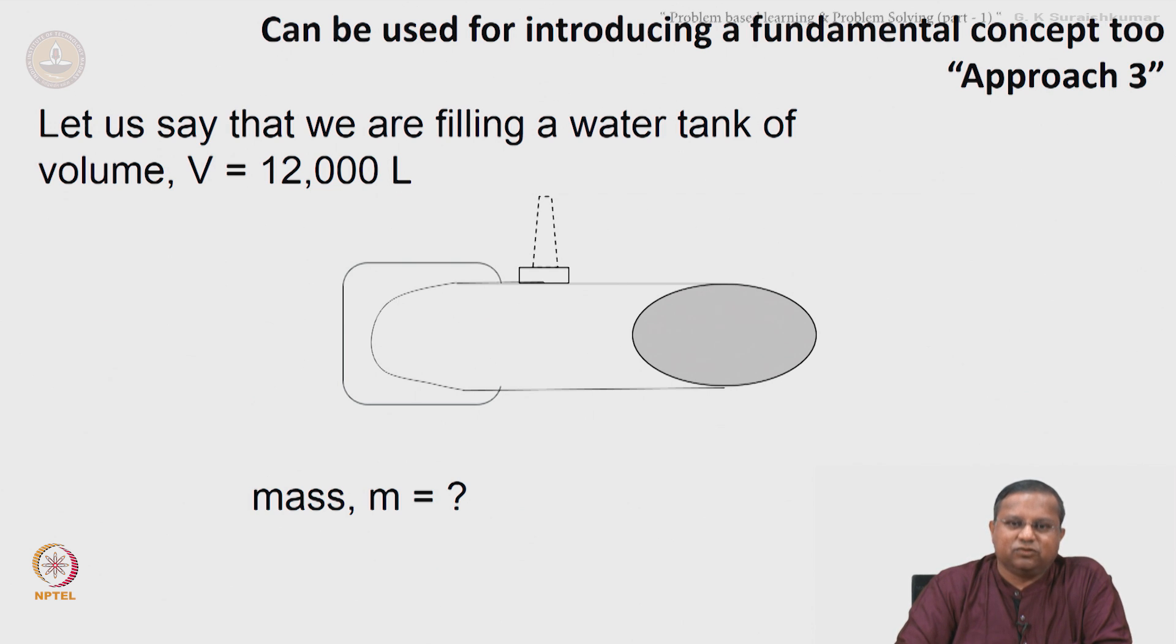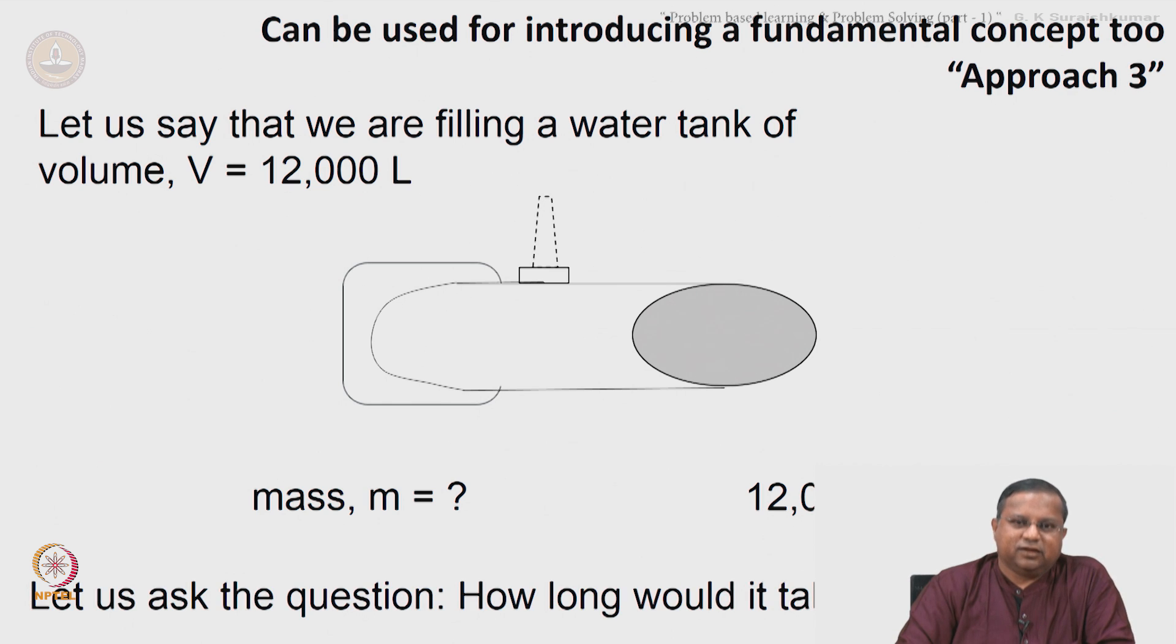I can just write down the mass directly: 12,000 liters, and you know the density of water is 1 gram per cc or 1000 kilograms per cubic meter. Therefore, mass is 12,000 kg is something I can directly write down. You don't have to ask them there.